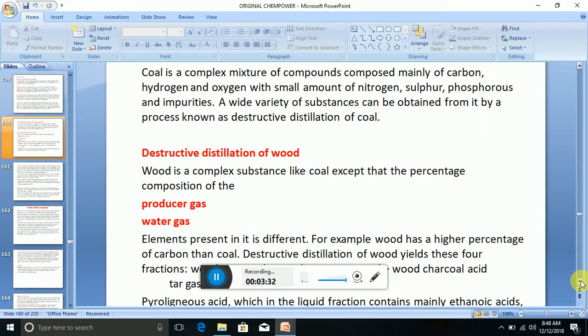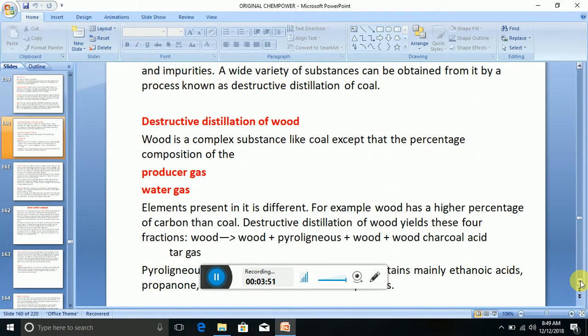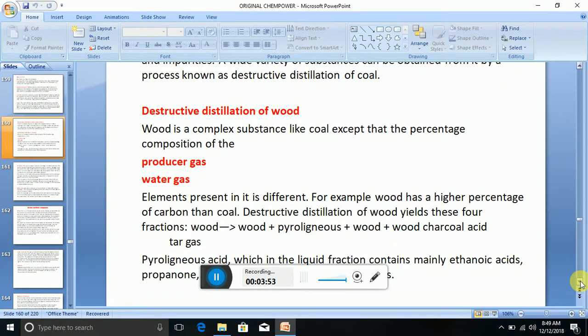Wood is a complex substance like coal, except that the percentage composition of the constituents of carbon and hydrogen differ. Now we also have producer gas and water gas, in which elements present in it are different. For example, wood has a higher percentage of carbon than coal.